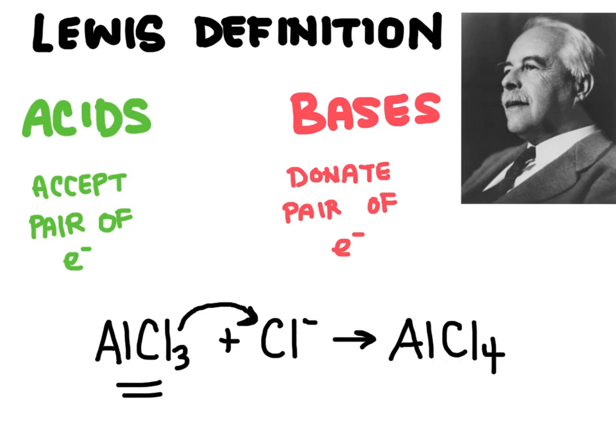This aluminum chloride compound would actually be able to accept that extra pair of electrons. So in this example, because the chloride ion has that extra pair of electrons, it's going to be the base, whereas the aluminum chloride over here is going to act like the acid.